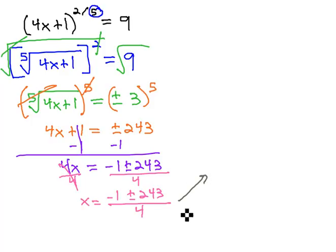I'm running out of space, so I'm going to go sideways as we do that plus or minus part, add and subtract. Negative 1 plus 243 is 242 over 4, and negative 1 minus 243 is negative 244 over 4.